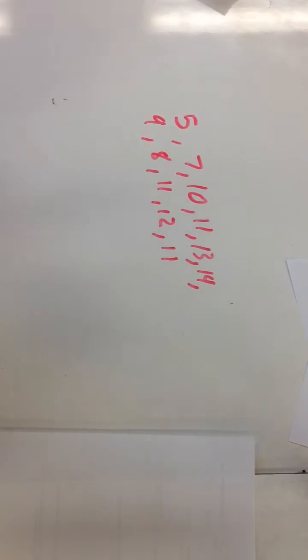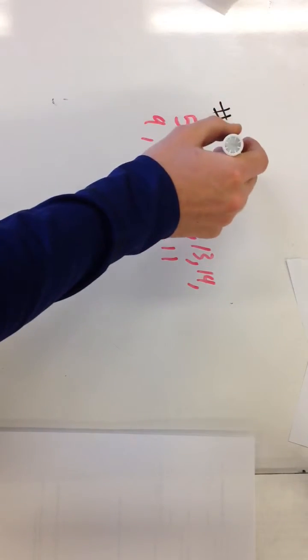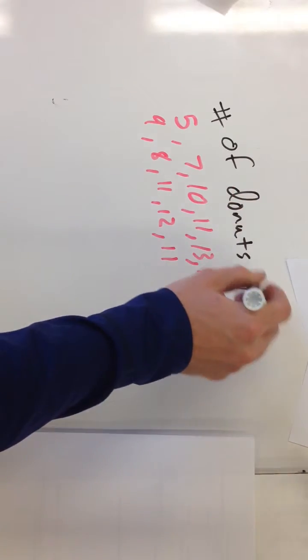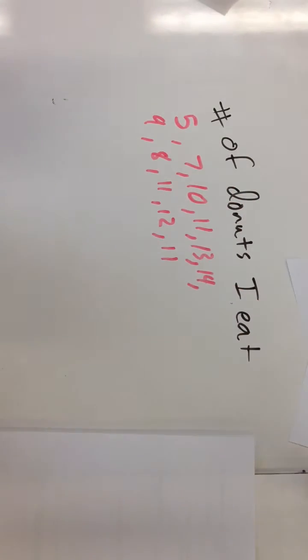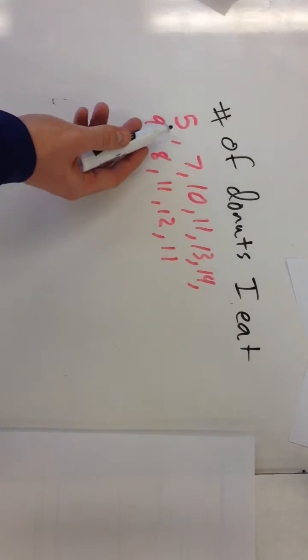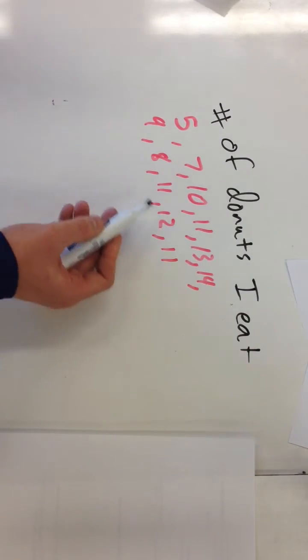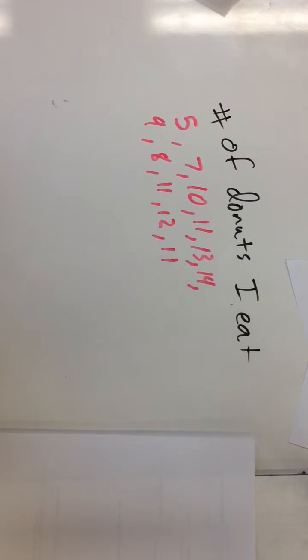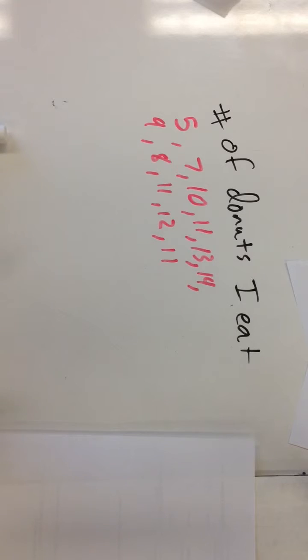So let's say I have this data, and this data is the number of donuts I eat a month. So this month, I kind of took it light, five donuts, but typically you can see I eat somewhere around seven to eight donuts a month. Not healthy, but they're delicious, and I live in a town that is filled with great donuts.